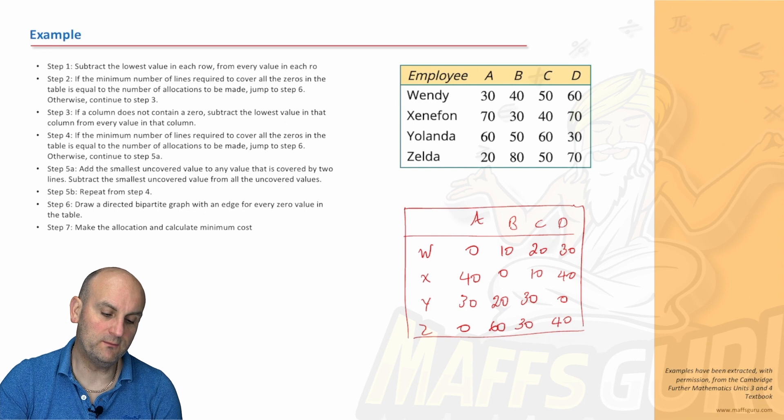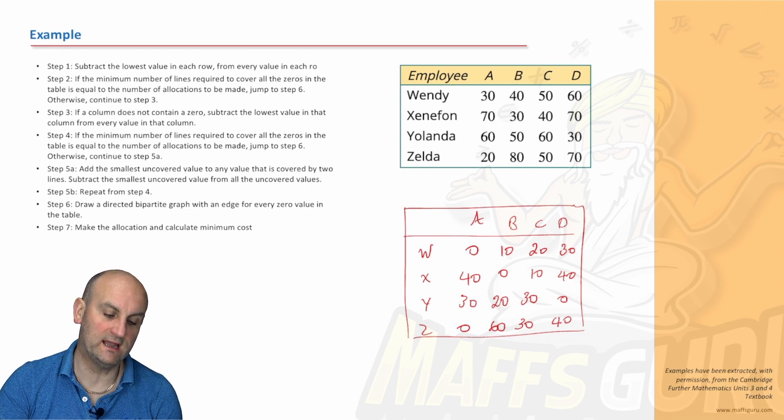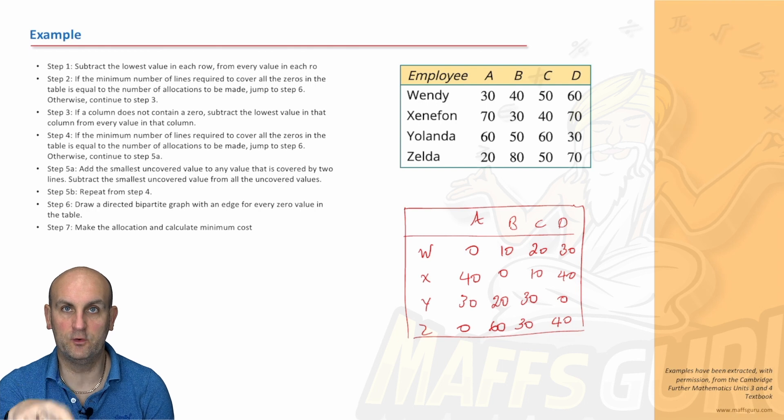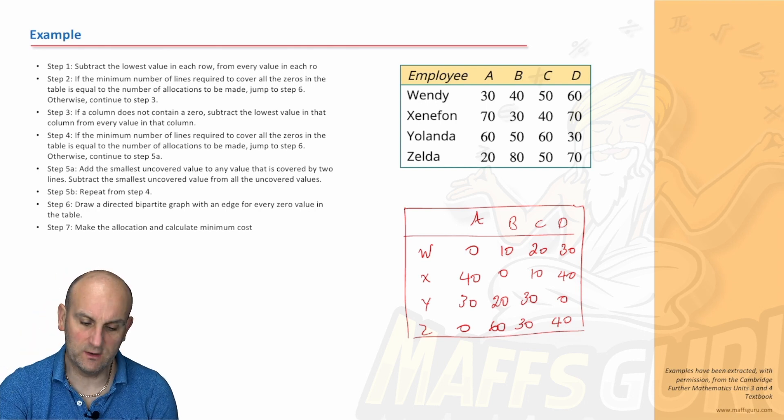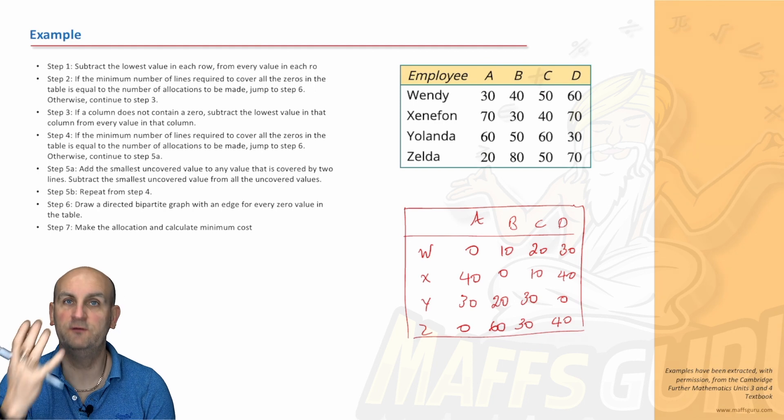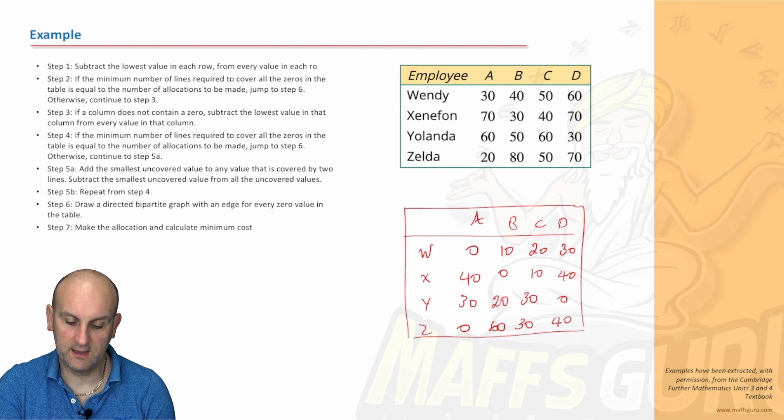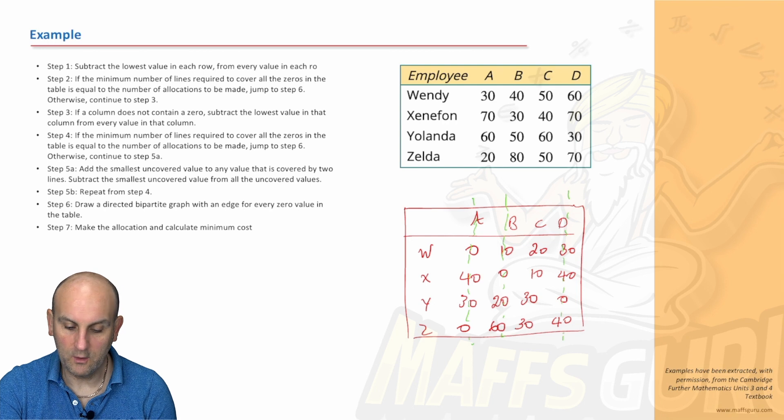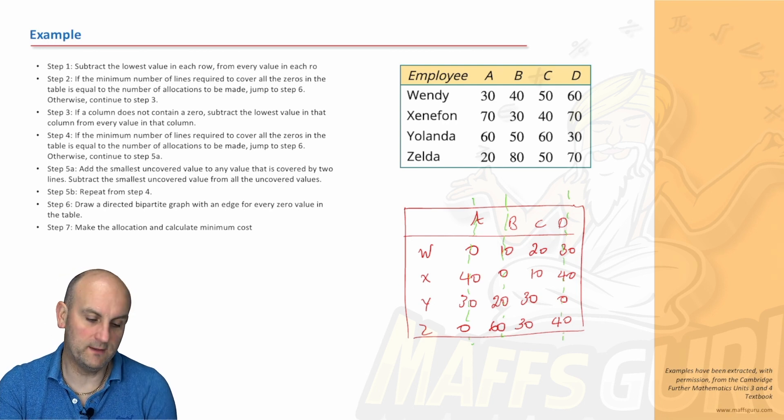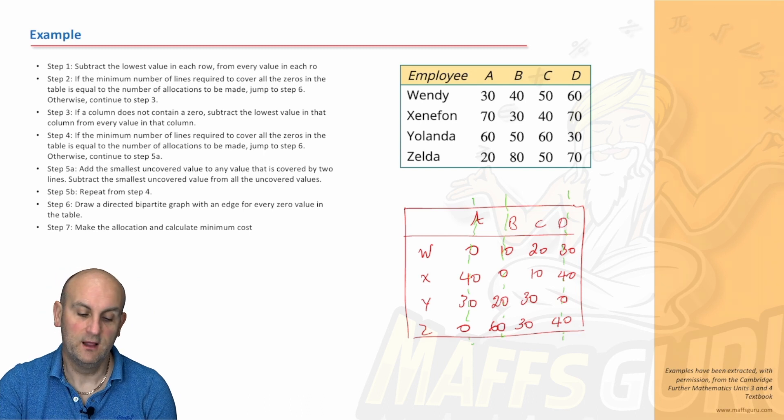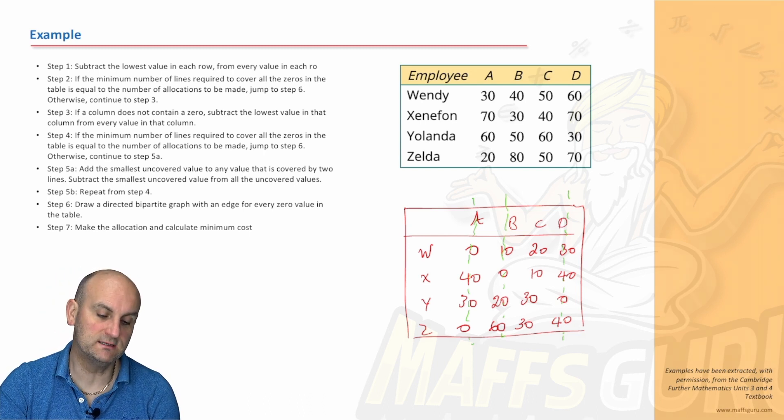If the minimum number of lines required to cover all the zeros in the table is equal to the number of allocations to be made, jump to step 6. So because we're making four allocations, if we can cover these in four lines, then we're good to go. So let's see what the minimum number of lines are. So I could do one, two, three, four. I could go horizontally through this and that would give me four lines. But we've got to find the minimum way of doing it. And as it turns out, there is a smaller way. There's one through there, one through there and one through there. Even if we did it horizontally, then we're pretty much, and it can be horizontally or vertically. It doesn't actually matter. Or a combination of both, but three lines. So the question says, is the minimum number of lines required to cover all the zeros in the table equal to the number of allocations? It isn't.